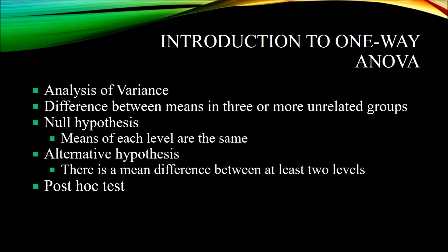A one-way ANOVA is a one-way analysis of variance — that's what ANOVA stands for, analysis of variance. It's an inferential statistic that tests to see if there's a difference between means in three or more unrelated groups.